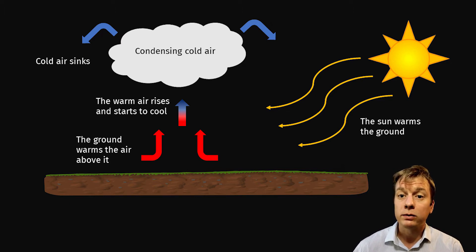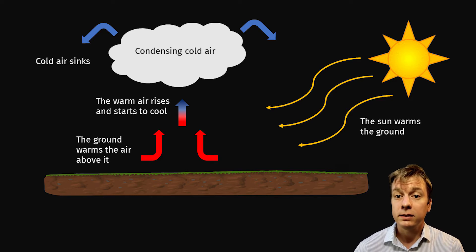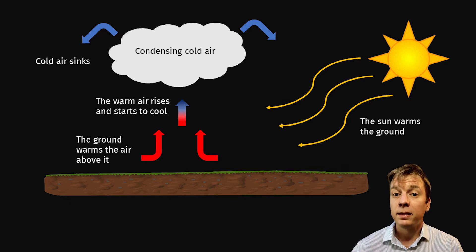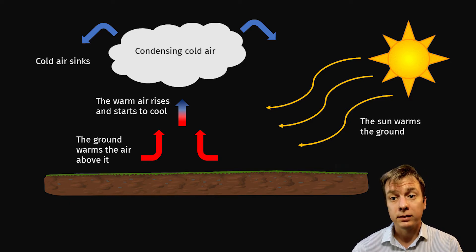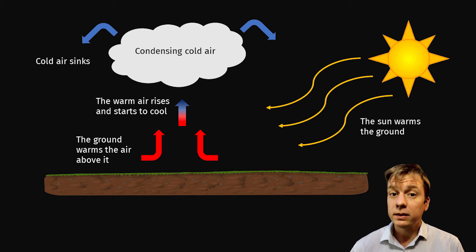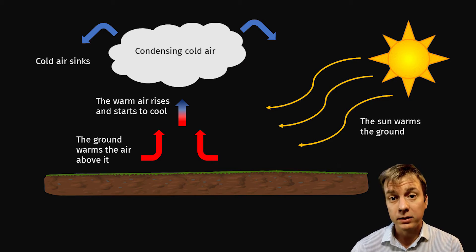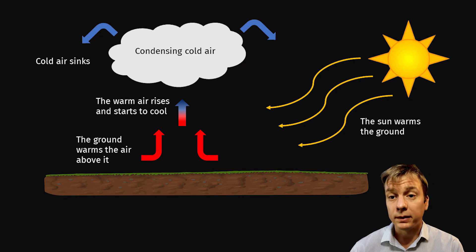Eventually, the air cools so much that it starts to get heavy and then sinks back down to the surface of the earth to be heated again. This cycle is called atmospheric circulation.